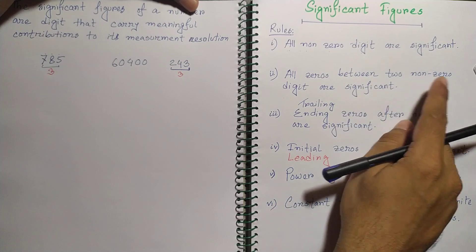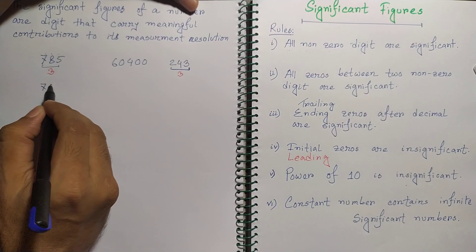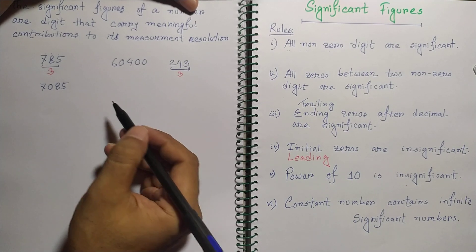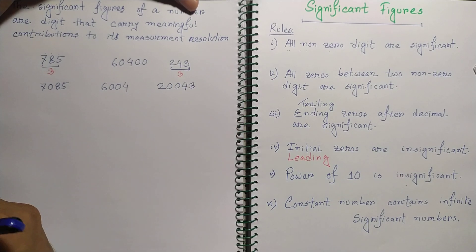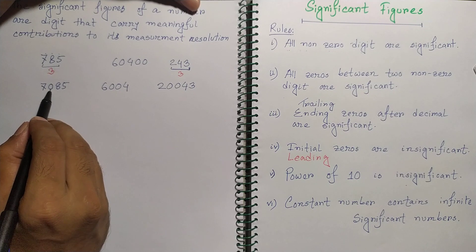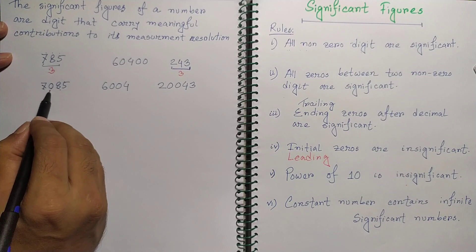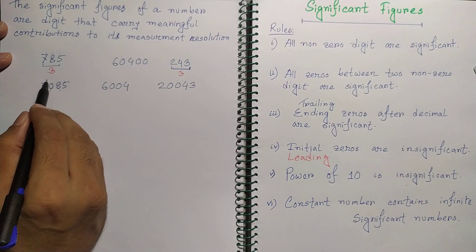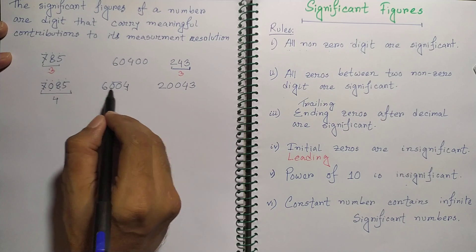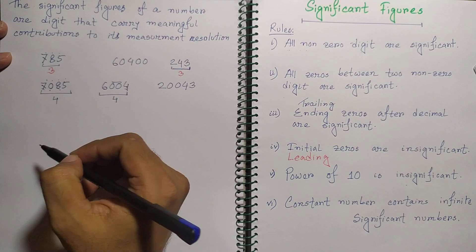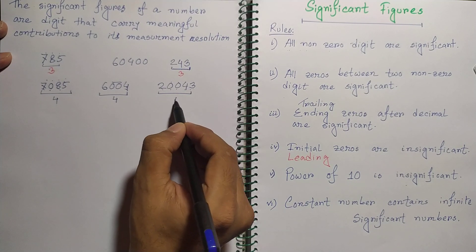All zeros between two non-zero digits are significant. Think about 7,085 or 6,004 or 20,043. In 7,085 the zero is between 7 and 8, so we have 4 significant figures. In 6,004 the two zeros are between 6 and 4, giving 4 significant figures. In 20,043 the two zeros are between 2 and 4, giving 5 significant figures.